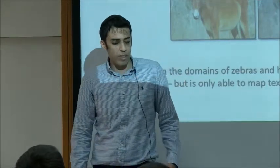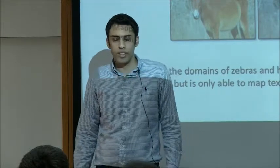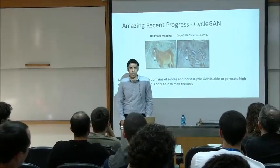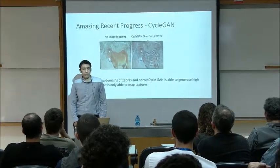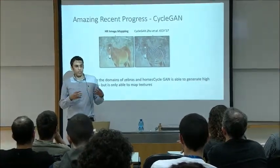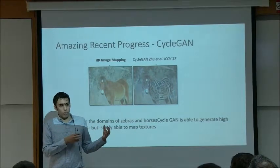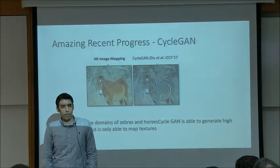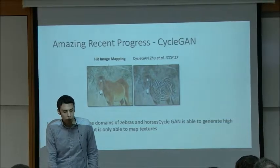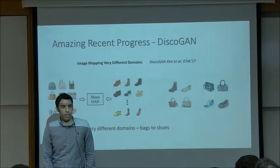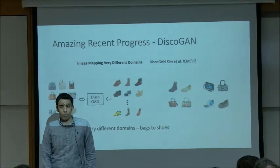Adversarial training has been very successful. I want to highlight two previous results. The first is CycleGAN, which used adversarial training to do high-resolution image mapping between domains without supervision. It took many images of horses and zebras without correspondences and learned an unsupervised technique to map between a horse and the analogous zebra image — mainly by changing the texture and adding stripes. Another approach is DiscoGAN, which was able to find more semantic analogies at lower resolutions, mapping between bags and analogous shoes in an unsupervised way.